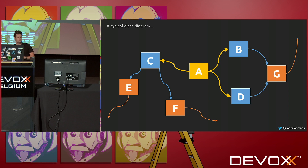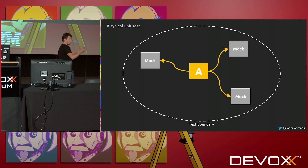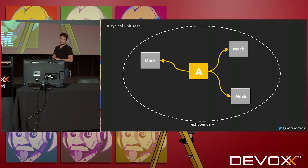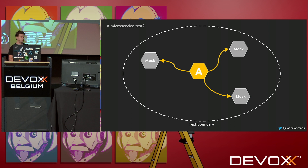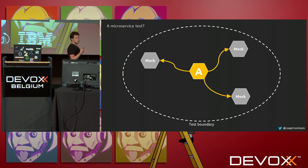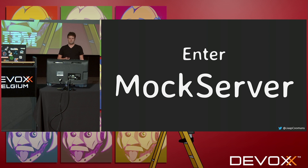Returning to the problem — how would that look? We put the class under test in the center, surrounded by mocks. That's our test scope. Can we do that for microservices as well? Of course we can. Here you see a similar setup, but instead of classes we're talking about microservices, and we have mocked microservices. That's where MockServer comes in.